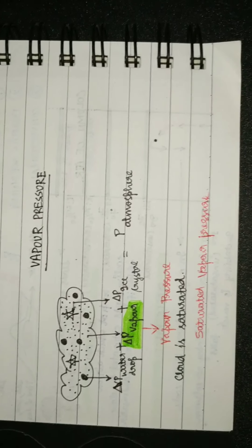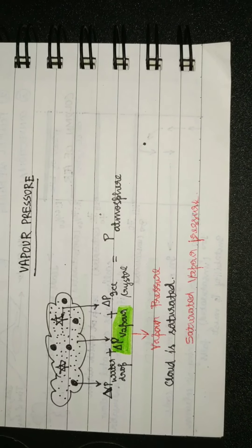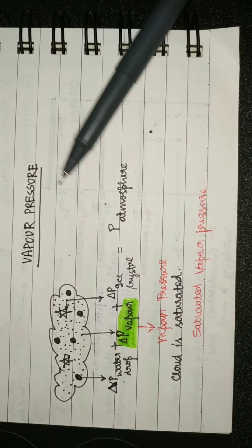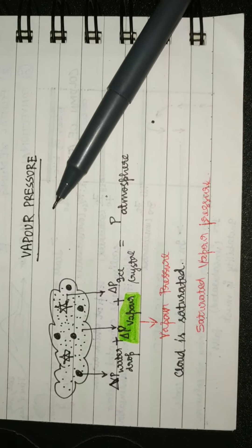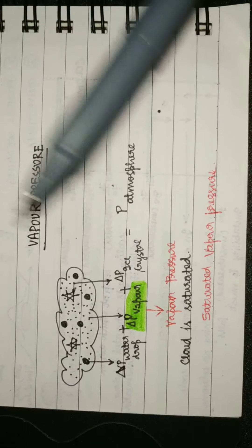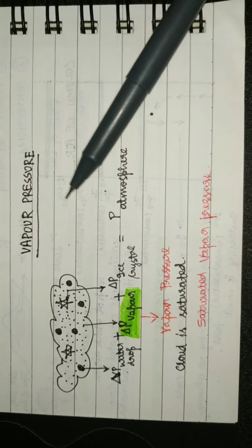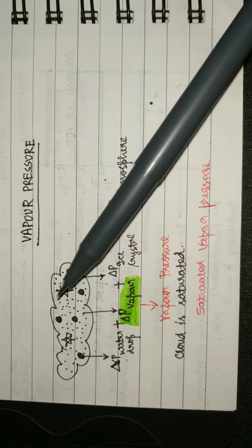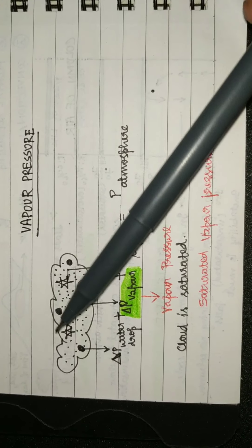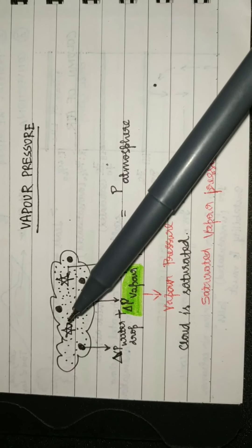Hello guys, welcome back. In this video we'll be learning two concepts: first, what is vapor pressure; then we'll learn how precipitation occurs. Now if you see the cloud, the cloud has many particles apart from the water vapor, water droplets, ice crystals. It has some other gases also.